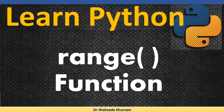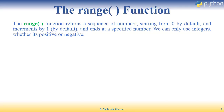Today we are going to learn the range function and how it works in Python. The range function returns a sequence of numbers, starting from zero by default, incrementing by one by default, and ending at a specified number. We can only use integers, whether positive or negative.